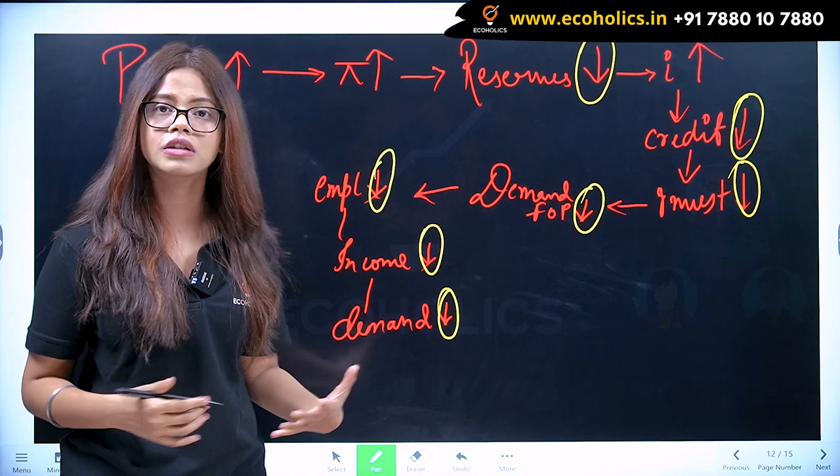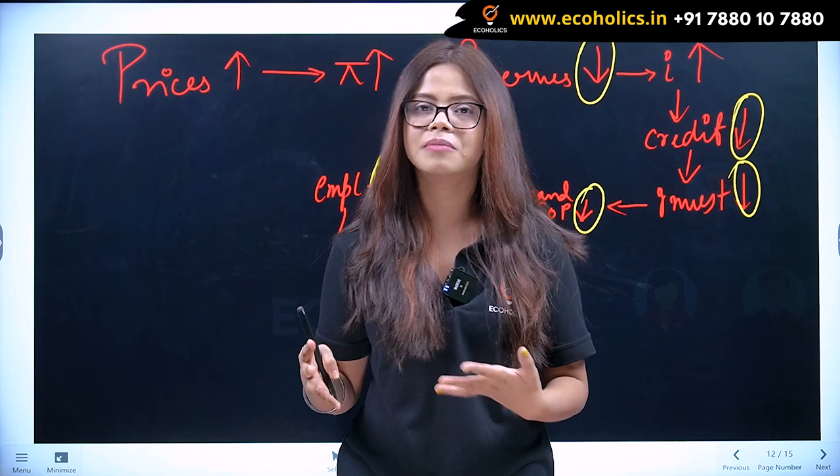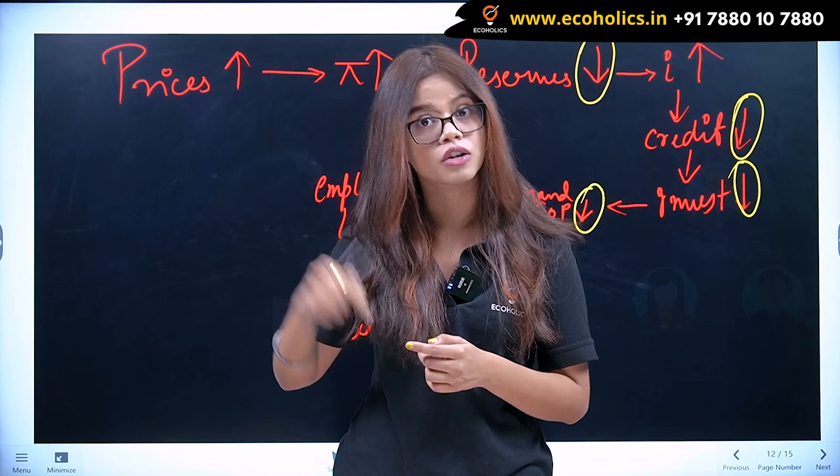This is basically what Hawtrey's Monetary Theory of Business Cycle talks about. He also says one most important thing: according to him, famines, floods, and national calamities are responsible for the fluctuations in the business cycle to some extent — partially, yes, they have a role.